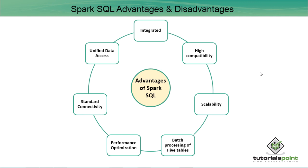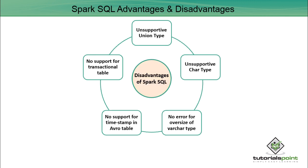Next is standard connectivity — it uses a very common way of connectivity like JDBC or ODBC. The last advantage is unified data access: using Spark SQL we can read data from different sources like JSON, Hive tables, etc.